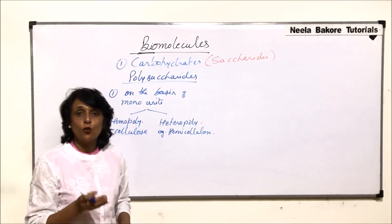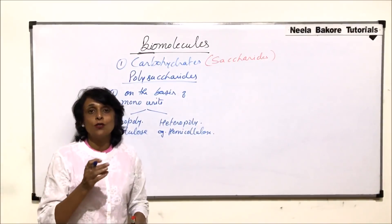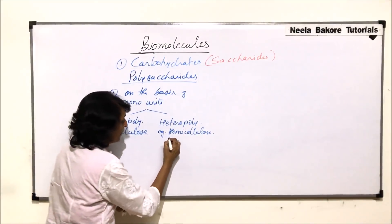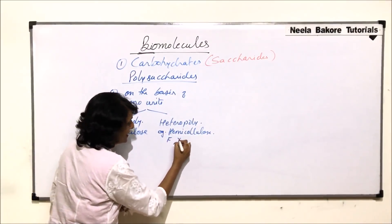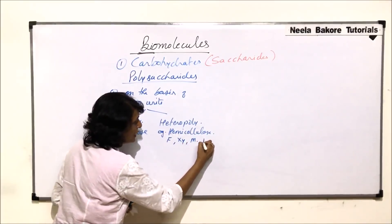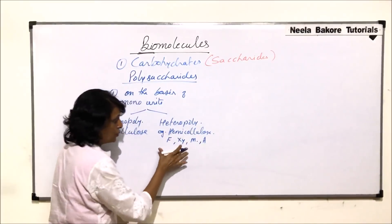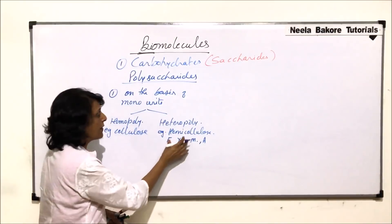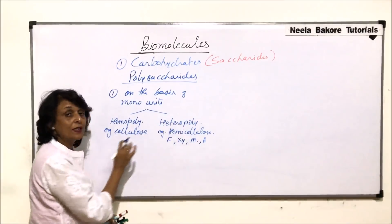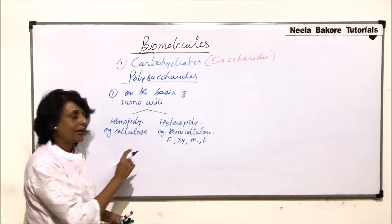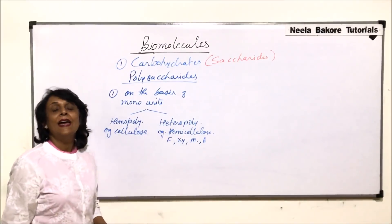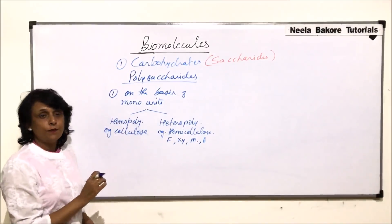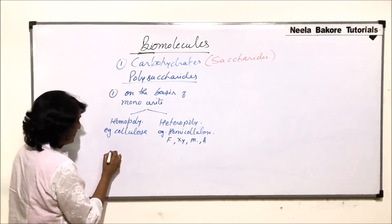Hemicellulose is made up of galactose, mannose, xylose, and arabinose. So there are different mono units which have combined to form this polysaccharide, and that is why we call it a heteropolysaccharide. This is one way of classifying them.